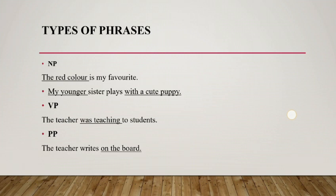Another sentence: 'my younger sister plays with a cute puppy.' 'My younger sister' is a noun phrase, and 'with a cute puppy' is a noun phrase used in object place. The second type is verb phrase. A word that describes an action or a state is called a verb phrase. For example, 'the teacher was teaching a student' — 'was teaching' is a verb phrase.